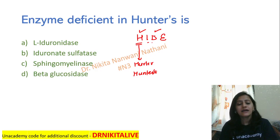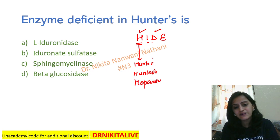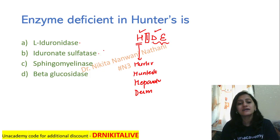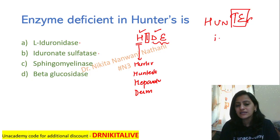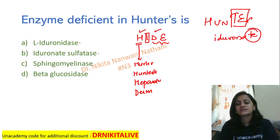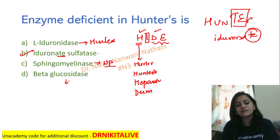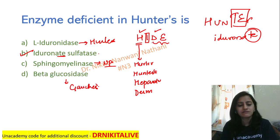So Hurler's and Hunter's have accumulation of heparin sulfate and dermatan sulfate. H for heparin sulfate, D for dermatan sulfate — iduronic acid-related. Now, which one has iduronidase and which has iduronate sulfatase? When we write Hunter's, the S at the end tells you it is iduronate sulfatase. So Hunter's has iduronate sulfatase, while iduronidase belongs to Hurler's. Sphingomyelinase is Niemann-Pick disease, and beta-glucocerebrosidase is Gaucher's disease.